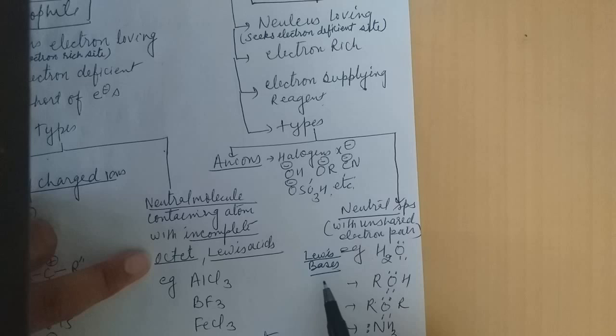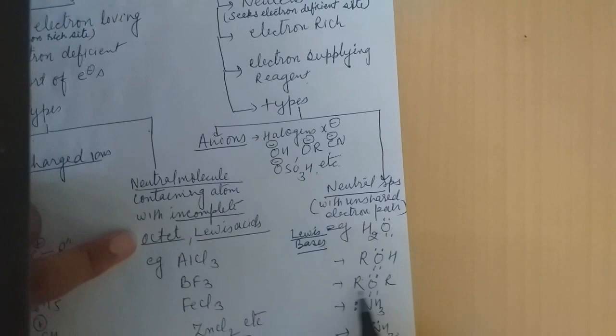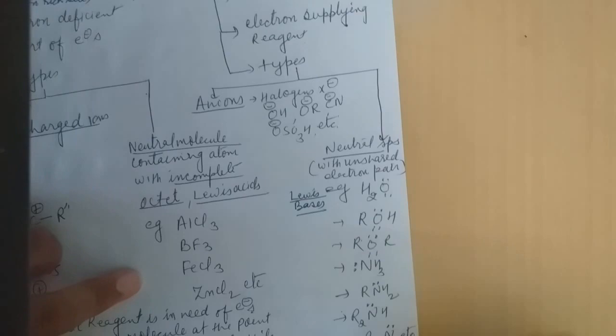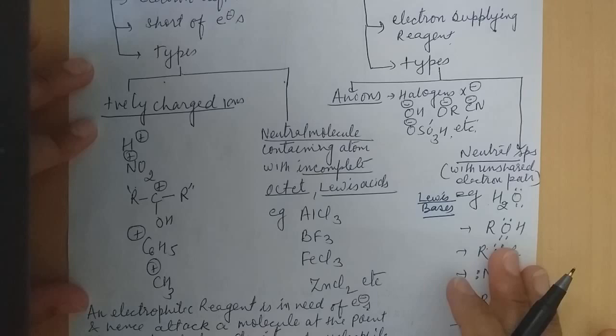Neutral nucleophiles also exist. They are all examples of Lewis bases. Lewis bases such as H2O — oxygen has two lone pairs of electrons — alcohols, ethers, ammonia, amines, primary and tertiary amines. They all are examples of neutral nucleophiles.